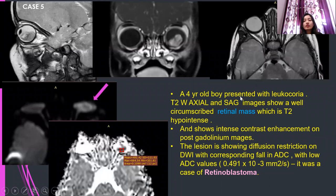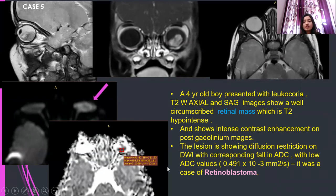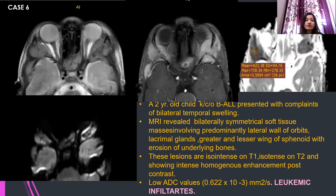Case 5: a 4-year-old boy presented with leukocoria. T2-weighted axial and sagittal images showed a circumscribed retinal mass, which is hypointense on T2, showing intense contrast enhancement and diffusion restriction with a corresponding fall in ADC. The mean ADC value was 0.491 × 10⁻³ mm²/s. It was a case of retinoblastoma.